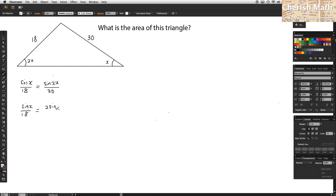2 sine x cos x is the same as sine 2x. Now, we simplify it.